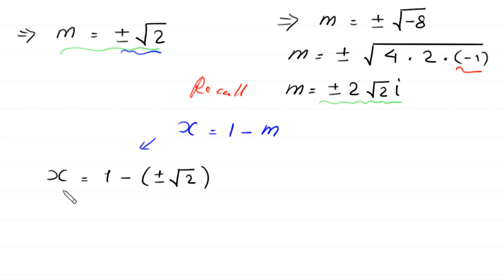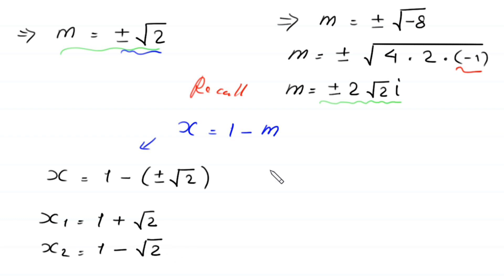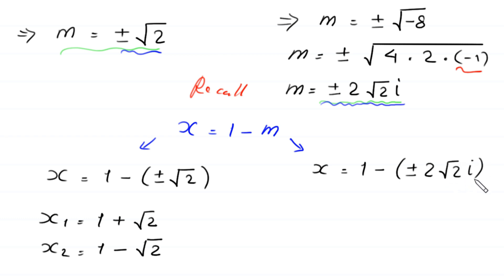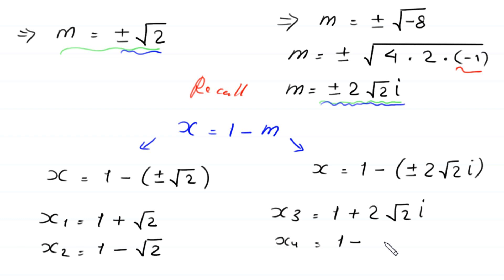This gives two real solutions: x₁ equals 1 minus square root of 2, and x₂ equals 1 plus square root of 2. When m equals plus or minus 2 root 2 i, we get two complex solutions: x₃ equals 1 plus 2 root 2 i, and x₄ equals 1 minus 2 root 2 i. These are the four solutions of the equation.